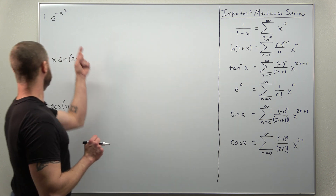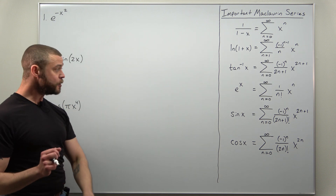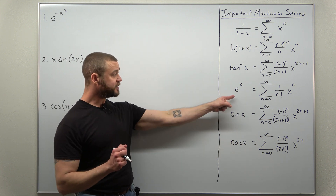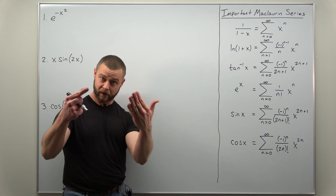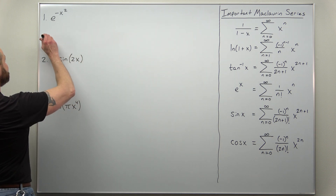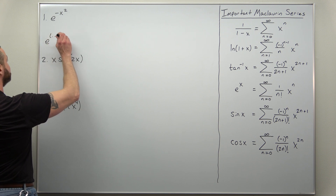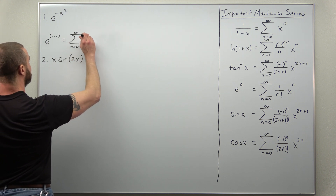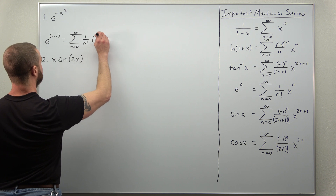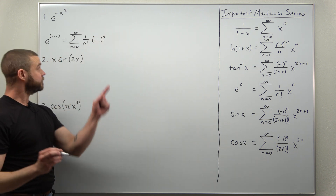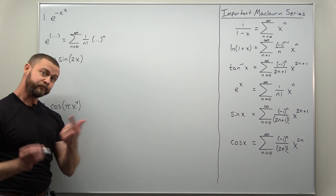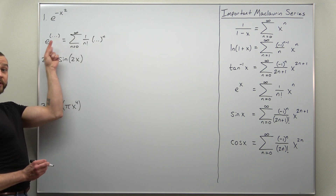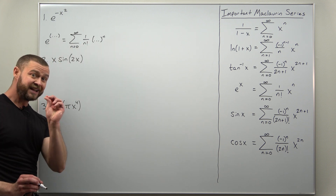Let's start with our first function e to the negative x squared. We're going to notice that looks very similar to the basic exponential function e to the x. I'll rewrite this as e raised to something — its Maclaurin series is a sum from n equals zero to infinity of one over n factorial times something raised to the nth power. We just need to notice we have e to the negative x squared and plug negative x squared into those parentheses.